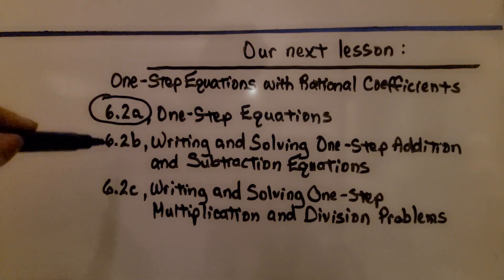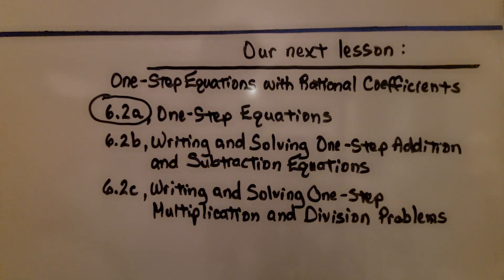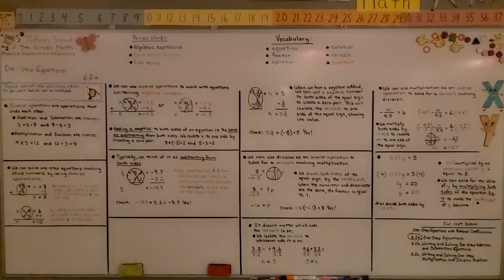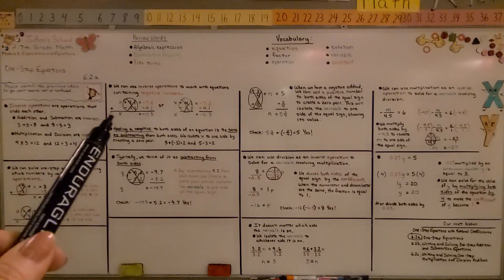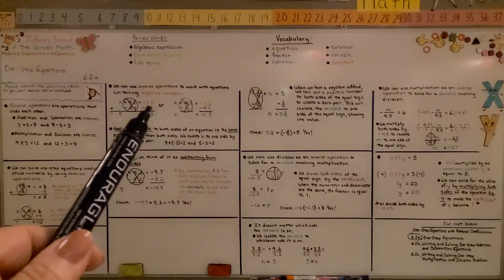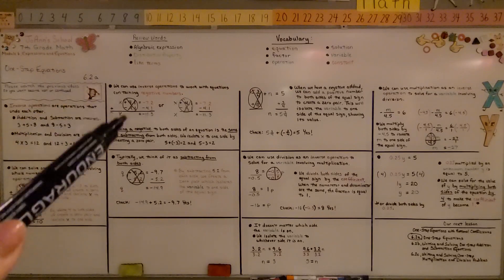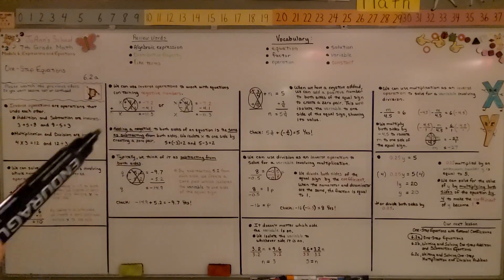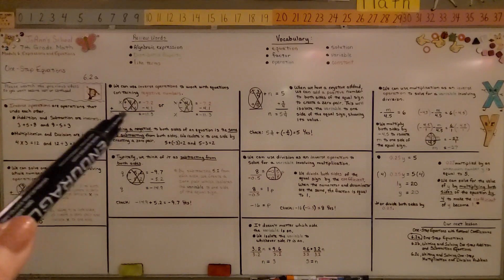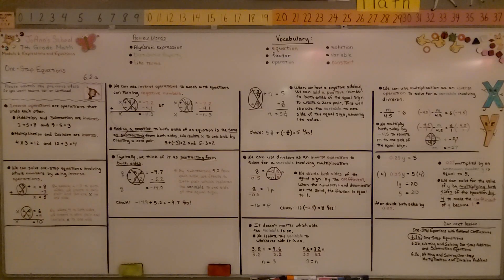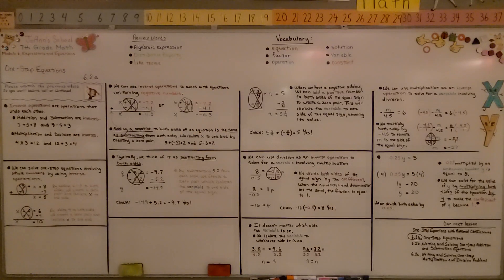That's the first part. We're moving on to 6.2b — writing and solving one-step addition and subtraction equations. Just remember, whatever you do to one side of the equation, you have to do it to the other side. We can't just add, subtract, multiply, or divide on one side thinking we'll isolate the variable — we have to do it to both sides of the equal sign. Have a great day!